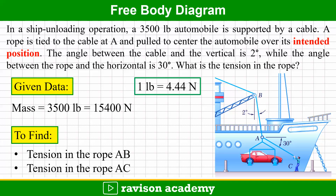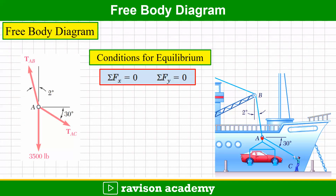We want to find the tension in rope AB and AC. Constructing the free body diagram: point A is where the automobile is hanging. From A, the weight of the car acts downward at 3500 pounds. String tension T_AC acts at 30 degrees with respect to horizontal, and string tension T_AB acts at 2 degrees with respect to vertical.